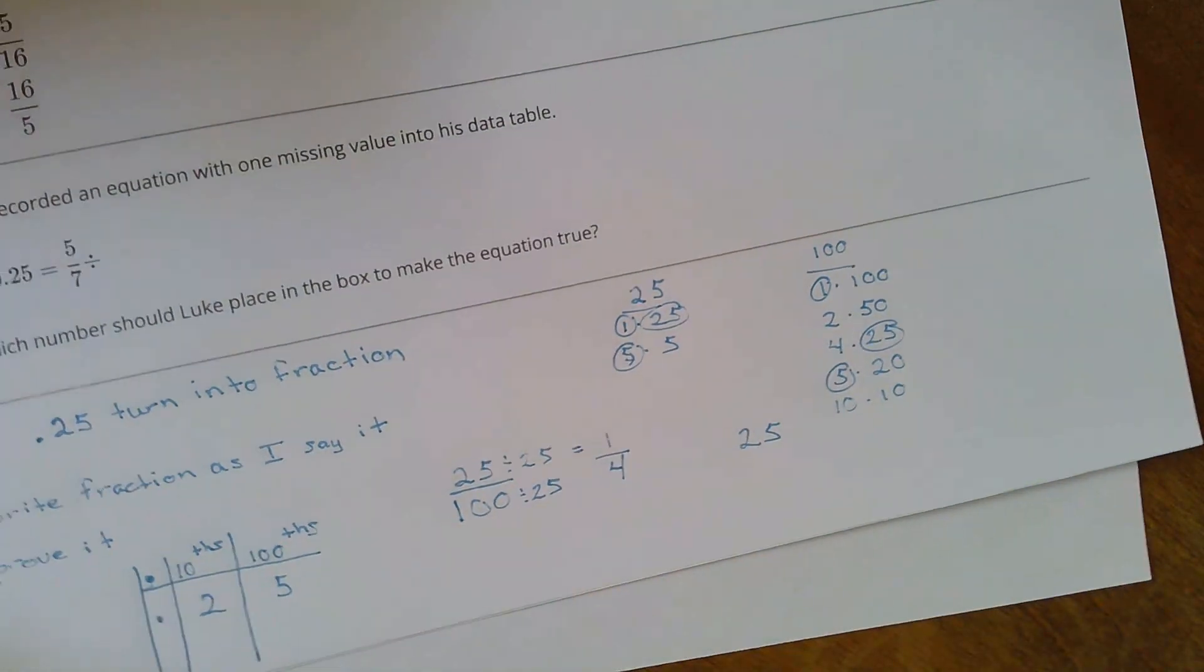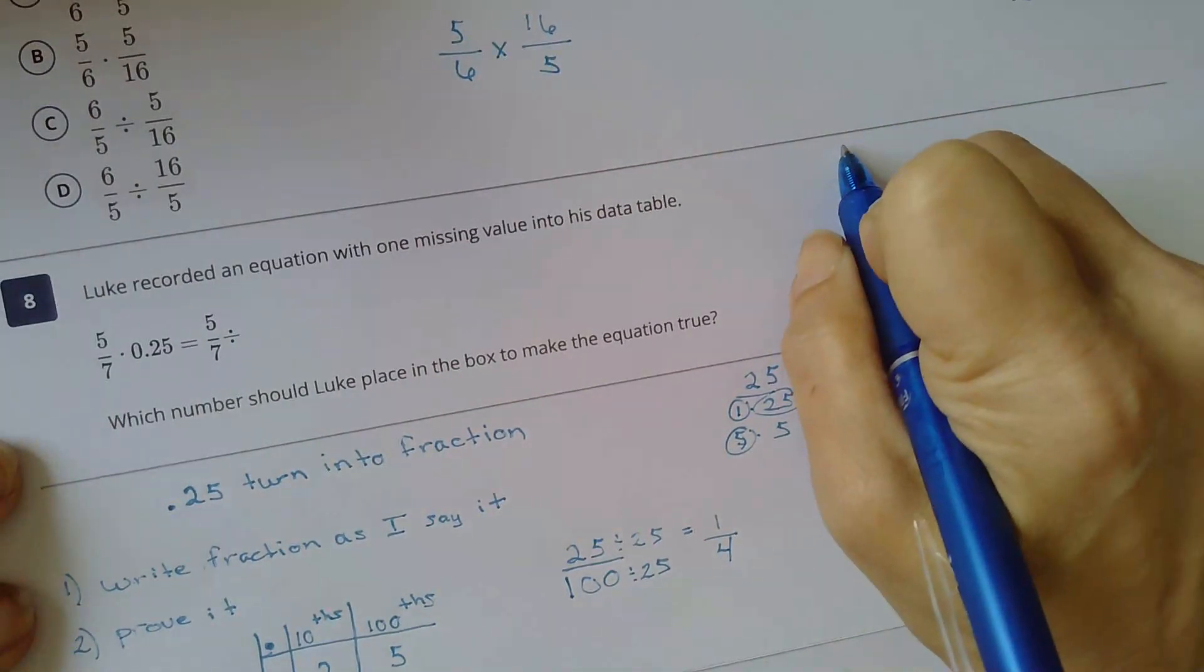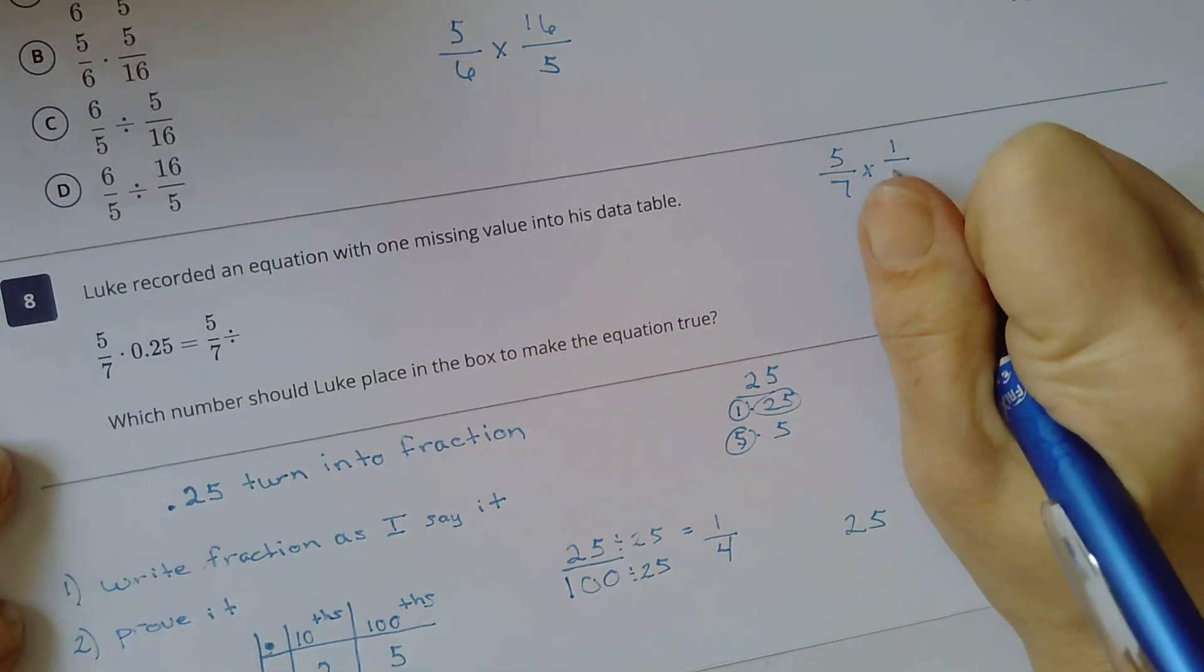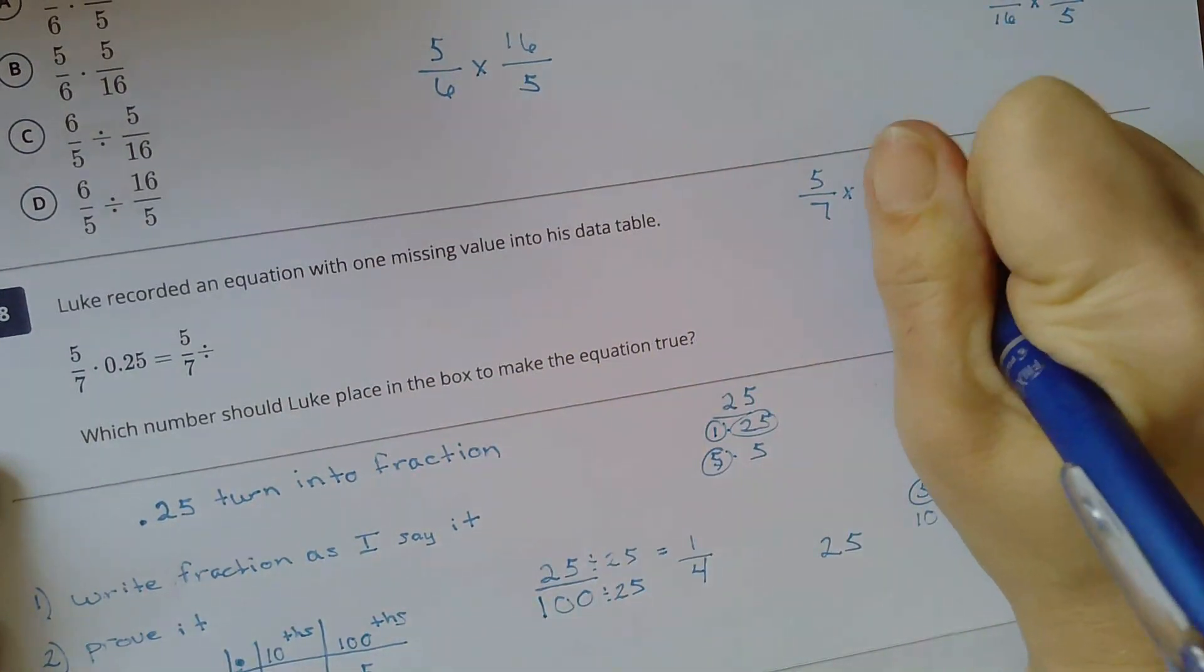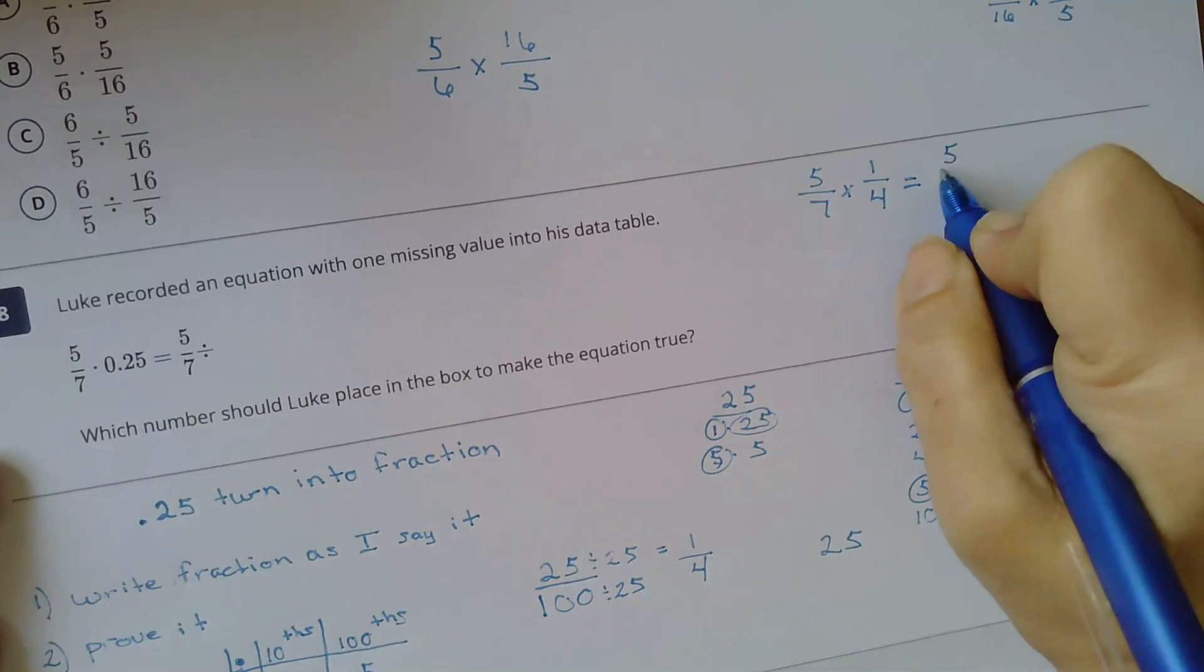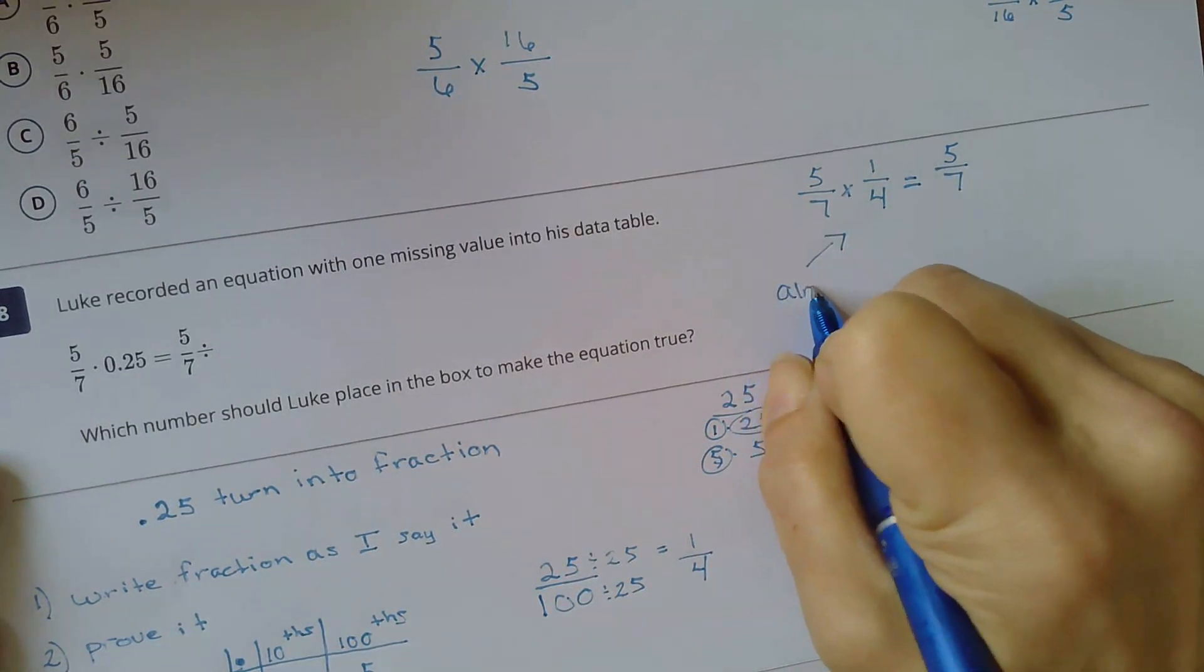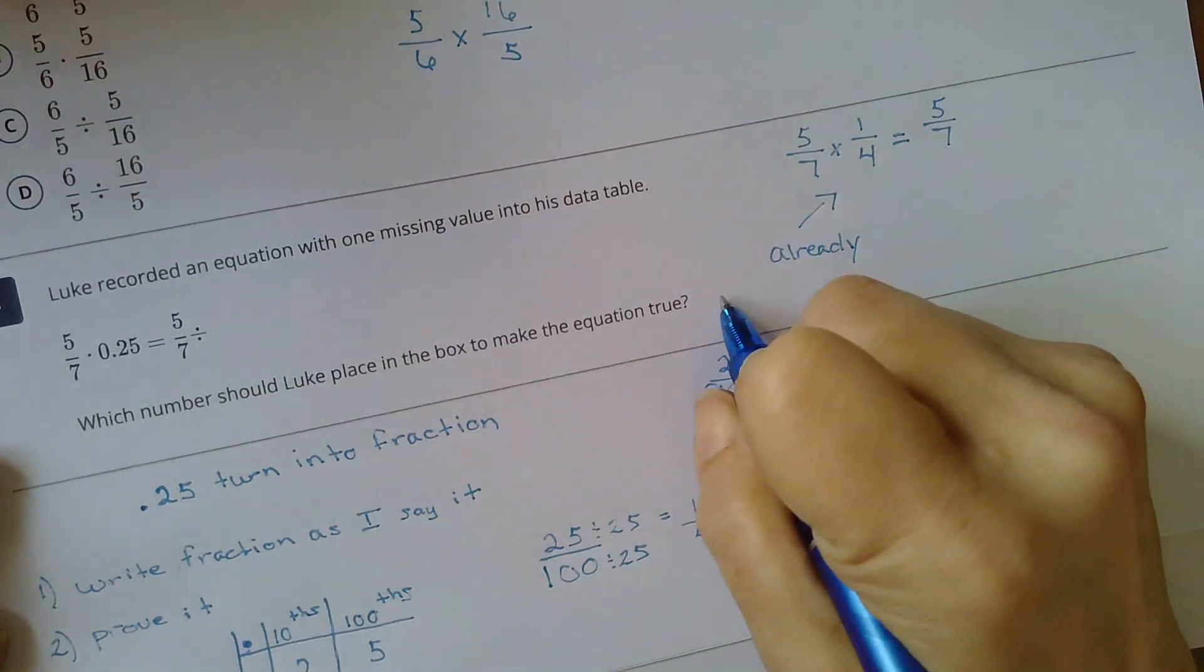So really what that is, is 5 sevenths times 1 fourth, right? But if I notice, I'm looking for the original division problem. This has already been multiplied by the reciprocal.